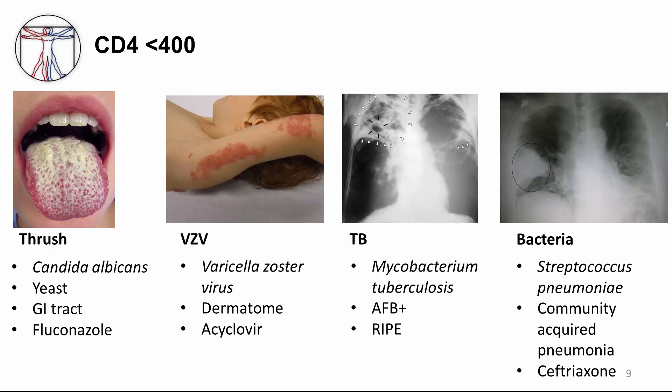TB is caused by Mycobacterium tuberculosis. HIV patients are at an 8% increased risk of reactivation of TB every year, regardless of CD4 count. The image shows a chest x-ray of a person with advanced TB — infection in both lungs marked by white arrowheads, and cavity formation marked by black arrows. Bacterial infections such as those caused by Streptococcus pneumoniae are also more common in HIV-infected individuals regardless of CD4 count. The chest x-ray on the right shows a wedge-shaped area of airspace consolidation in the right lung, characteristic of community-acquired pneumonia from Streptococcus pneumoniae.